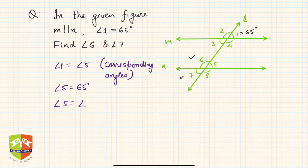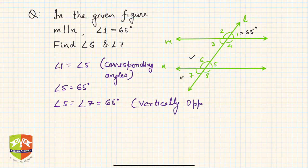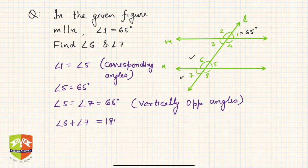Now angle 5 is equal to angle 7 is equal to 65 degrees. Why is this? They are vertically opposite angles. And then angle 6 plus angle 7 is 180 degrees. Why? Because these are forming a linear pair.